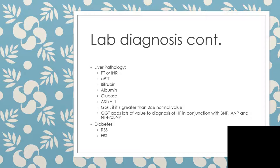GGT in particular — if it's greater than twice the normal value, then there's a problem ongoing. GGT adds a lot of value to the diagnosis of heart failure when done in conjunction with the value of brain natriuretic peptides, atrial natriuretic peptides, or NT pro-BNP. When you match all these parameters together, you'll be comfortable to say this is heart failure.